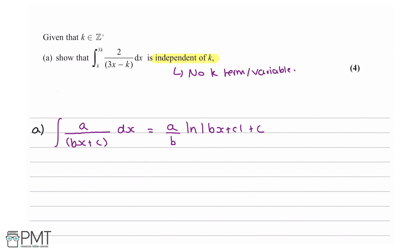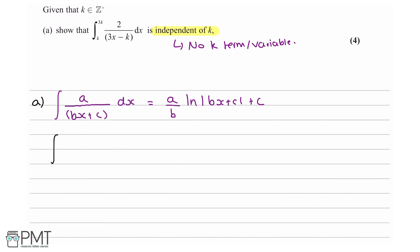So I'm going to use this formula to evaluate our integral. We can see that the integral of 2 over 3x minus k with respect to x — first I'm going to evaluate this integral without the limits of integration, as a first step to show the examiner that we can actually evaluate the integral, because this is a marking point. We can see that our a is 2 and our b is 3, so this is 2 over 3 times the natural log of 3x minus k.